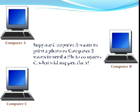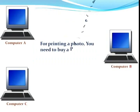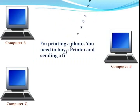Suppose computer A wants to print a photo, or computer B wants to send a file to computer C — what will happen then? For printing a photo, you need to buy a printer, and sending a file to another computer needs to set up a network.